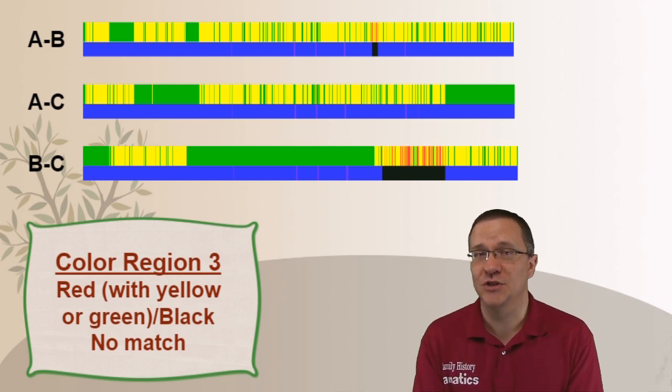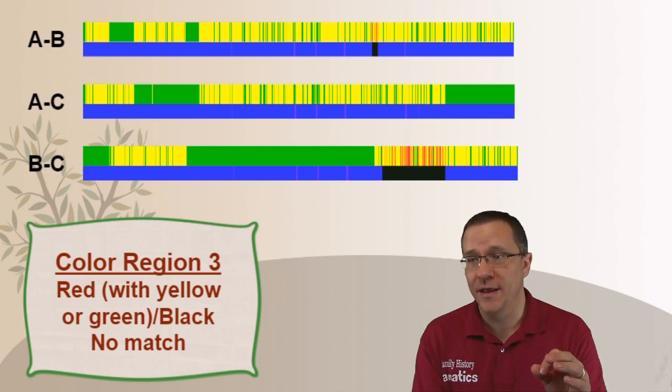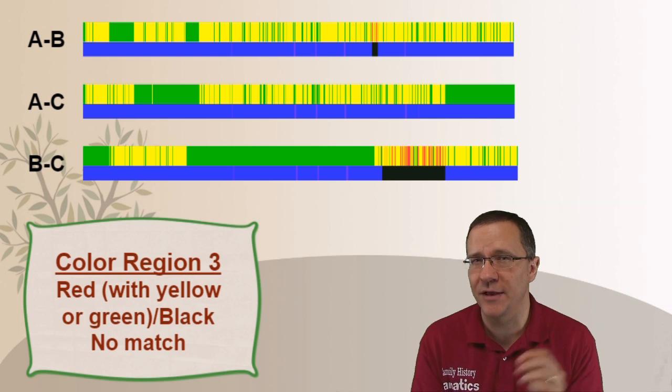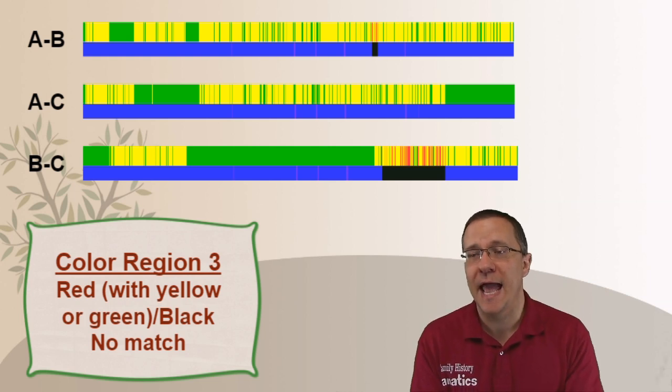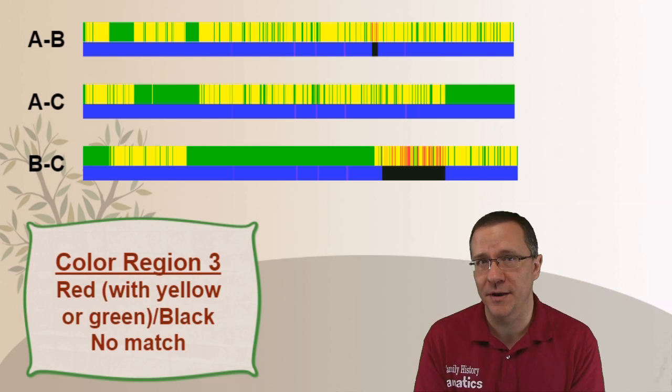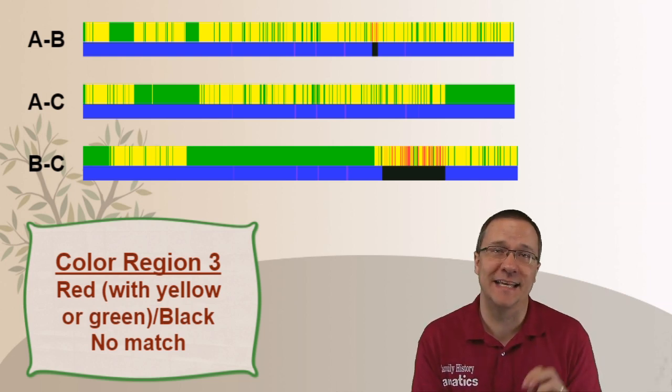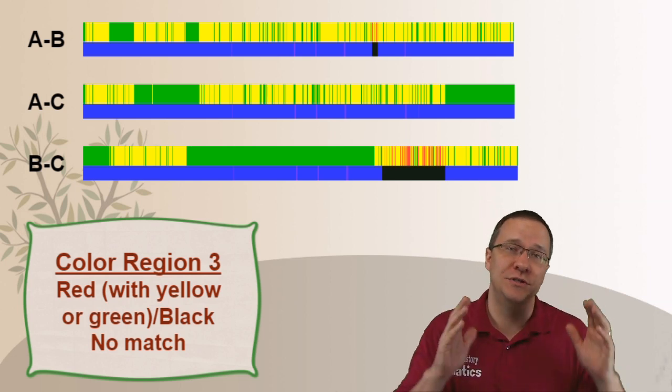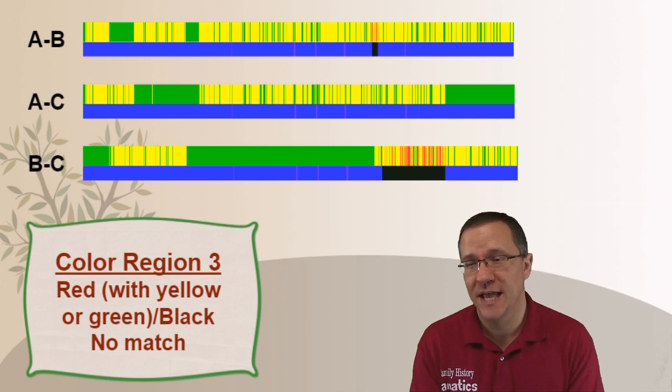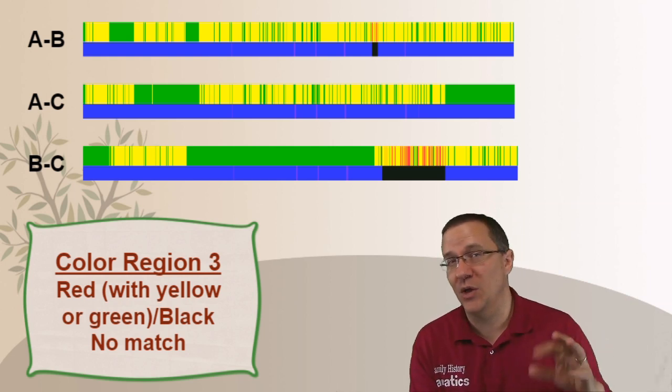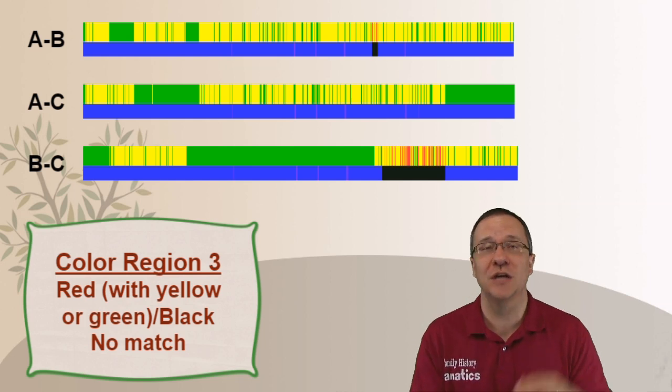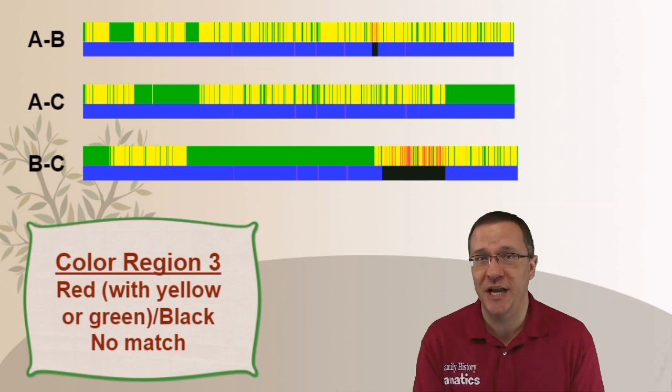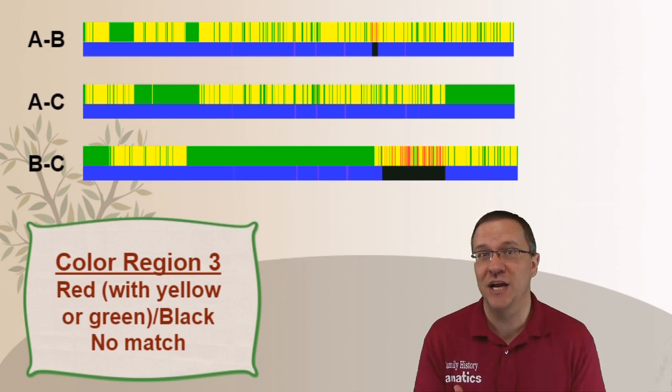And the third color region is going to be red on the top, although this is rarely a solid red. It is usually red intermixed with yellow and a black on the bottom. Now what this indicates is this indicates it is not a match. So this is a segment where you don't match the other person on either one of your chromosomes. Now the reason why I say it is red with some yellow and sometimes even green interspersed is because we share a lot of DNA. Just humans we do. And so just by chance there's going to be a lot of what you shared that is in common.